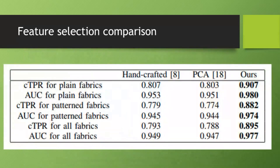Next, we quantify the results using the CTPR metric. As a reminder, CTPR is the recall when the FPR is zero — no false alarms. In this table, we compare our autoencoder with handcraft features and PCA features. For handcraft features, the mean value and standard deviation were calculated for each patch. For PCA, we reduce the dimension of each patch as feature selection. It is clear that our autoencoder is better in all cases, with an improvement of about 13% for all fabrics.